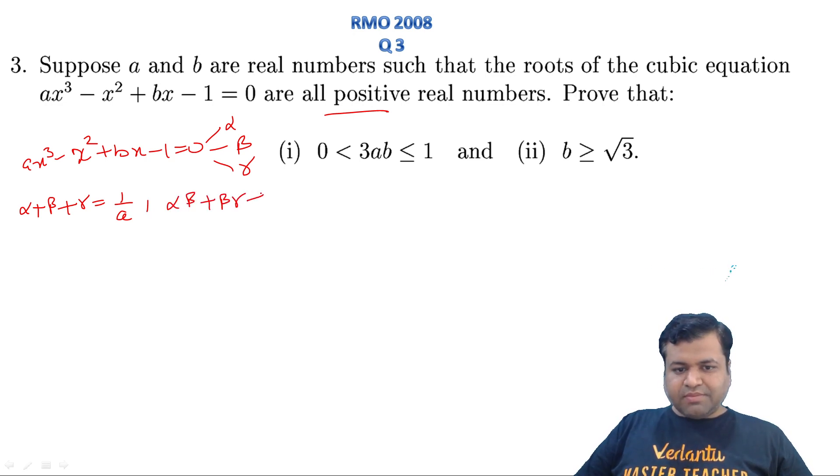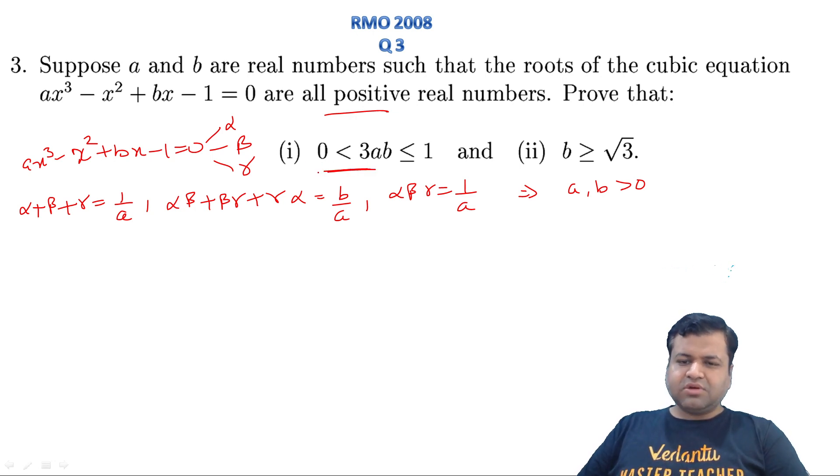αβ + βγ + γα, that will be b/a, and αβγ product of the roots that will be 1/a. Since all these values, all the roots are positive, we can clearly say a and b are positive. So obviously the first inequality, 3ab will be greater than zero, that is automatically true. So all we need to prove is 3ab ≤ 1 and b ≥ √3.